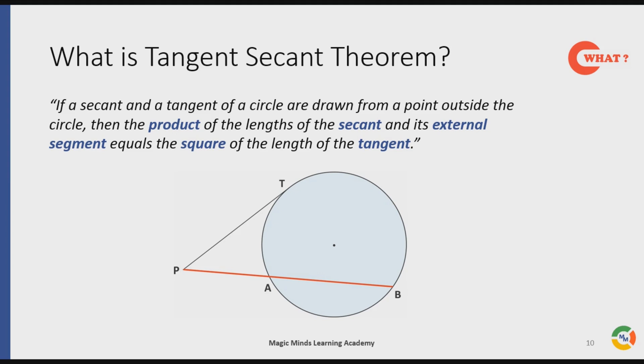That is PT square. This means PT² = PA × PB. So this is the what part of Tangent Secant Theorem. Now let's understand the why part of Tangent Secant Theorem. Let us look at the proof.